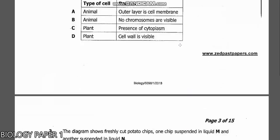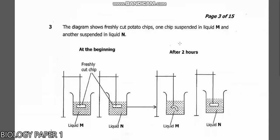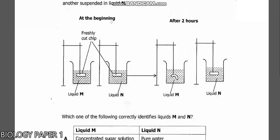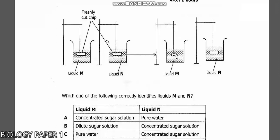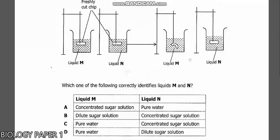Question 3 says the diagram shows freshly cut potatoes, one chip suspended in liquid M and another suspended in liquid N. This at the beginning, then after two hours. You can see liquid M and liquid N. Look at M - the potato has curved. In liquid N the potato remains the same. Which one of the following correctly identifies liquid M and liquid N?